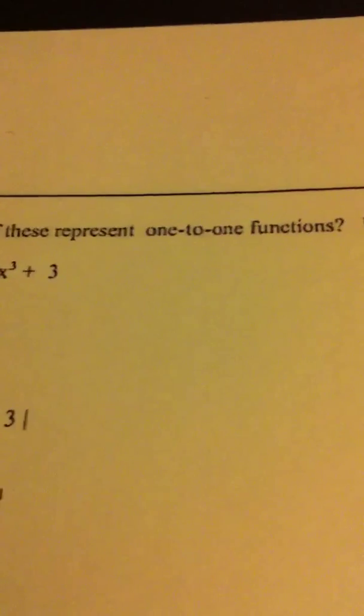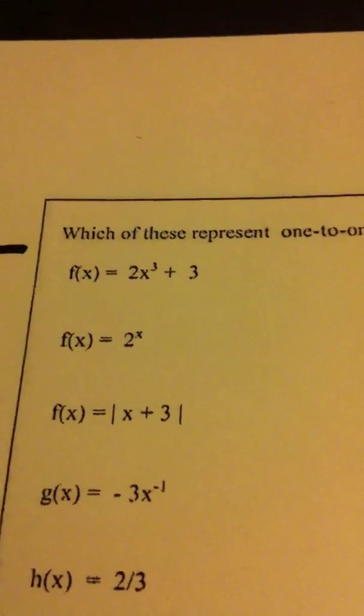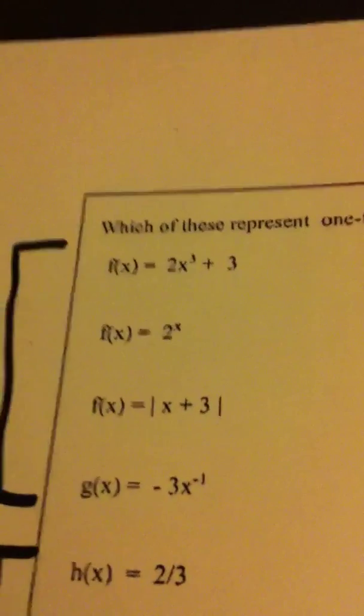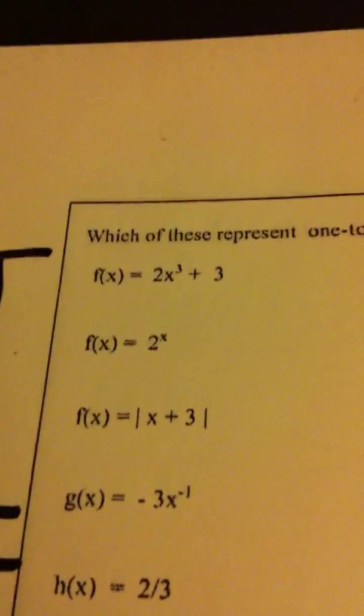Now we want to know if they're one-to-one functions. Well, remember, if something is a one-to-one function, first of all, it has to be a function. That means it already passed the vertical line test. Now, to be one-to-one, it has to pass the horizontal line test.